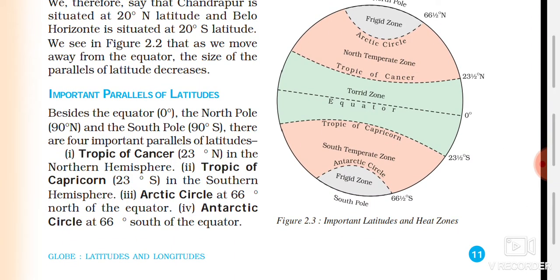Now, the important parallels of latitudes: the north pole is at 90 degrees, the equator is at 0 degrees. Above the equator there are very important latitudes: the Tropic of Cancer, the Tropic of Capricorn, the Arctic Circle, and the Antarctic Circle.